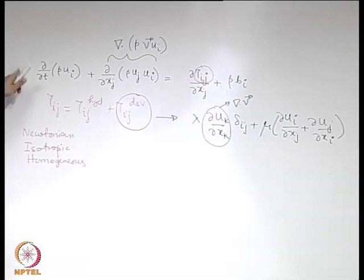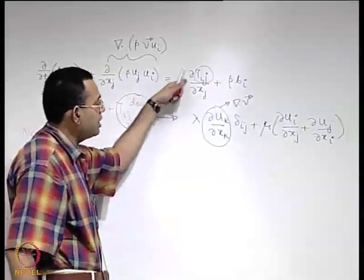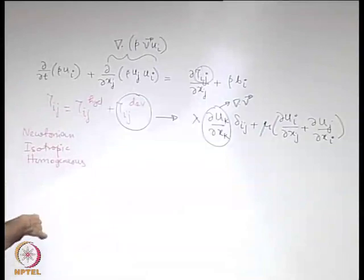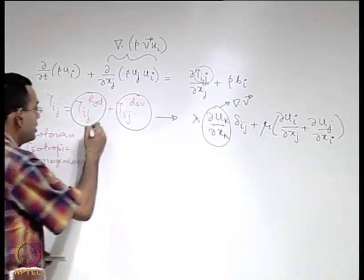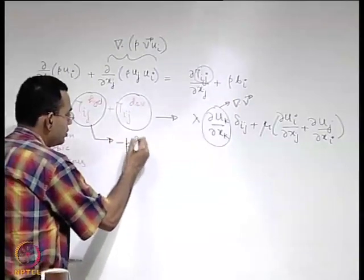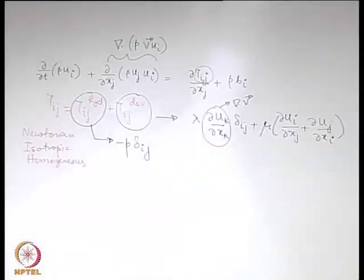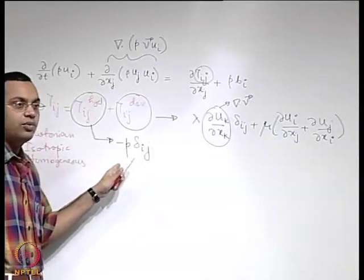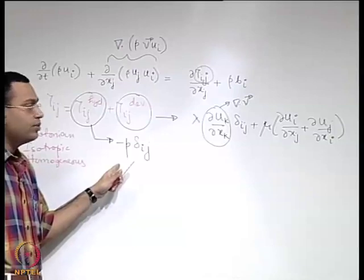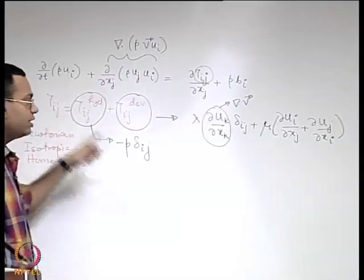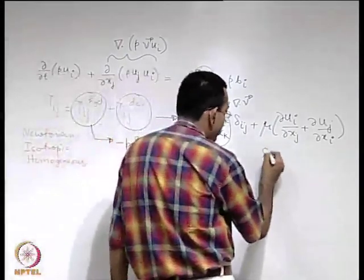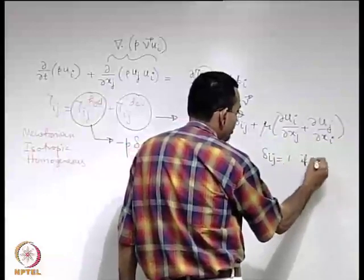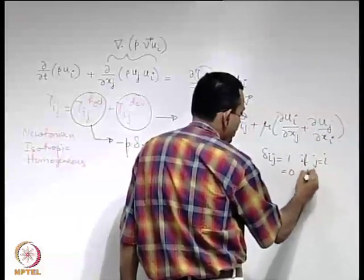We must keep in mind that tau_ij also has a hydrostatic component due to pressure distribution — it is a normal component. We use the delta_ij notation: when i equals j this is 1, otherwise it is 0. So delta_ij equals 1 when j equals i and equals 0 when j is not equal to i. This means when talking about a normal component of stress, only this term 1 comes into the picture.